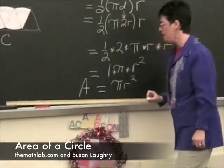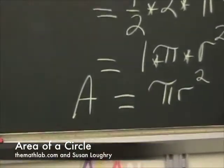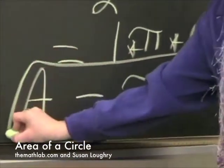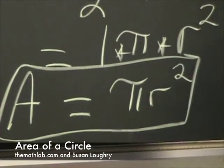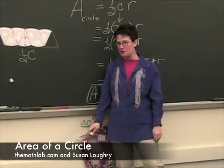That is going to be the area of any circle in the world. Pi times radius squared. Always, always, always works because the Greeks had the smarts to divide a circle up and turn it into a parallelogram.